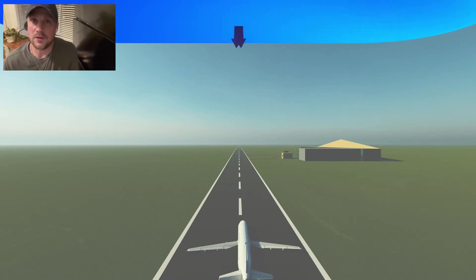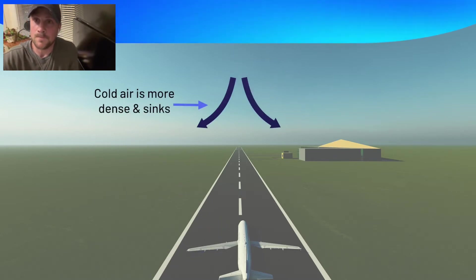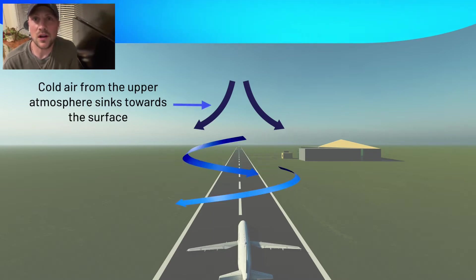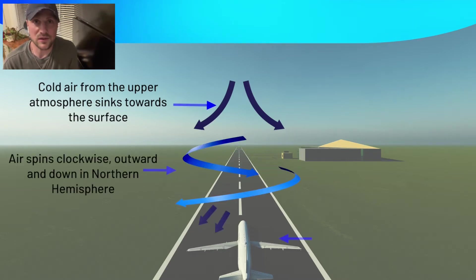Up in the upper atmosphere, the air is colder. Cold air is more dense than warmer air and therefore sinks. As it sinks toward the surface, it spins clockwise, outward, and down in the northern hemisphere. In the southern hemisphere, it spins in the opposite direction.